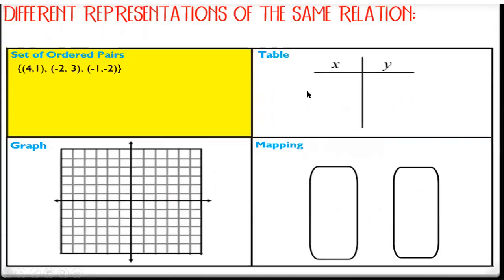So the first way — what if I give you a set of ordered pairs? What do I do? Well, I can take that set of ordered pairs and I can write it all three other ways. It would probably be easiest to go from a set of ordered pairs to a graph because all we have to do is graph these points. So we'll start with (4, 1) — that means I go over four and up one and plot a point.